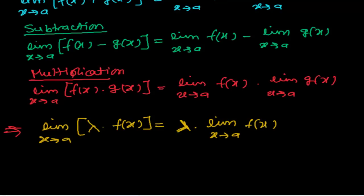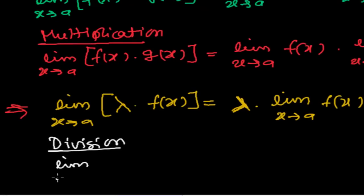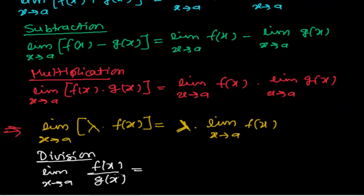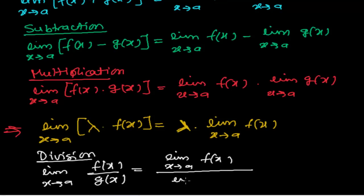Now the division rule — what happens in division. Suppose the limit as x tends to a when one function is divided by another: f(x) divided by g(x). We can simply find the limit of the first function as x tends to a, divided by the limit of the second function as x tends to a. We find the limit of the first function and divide it by the limit of the second function.